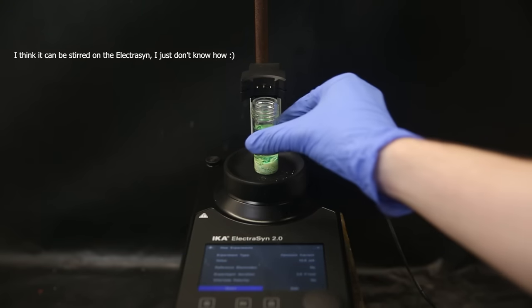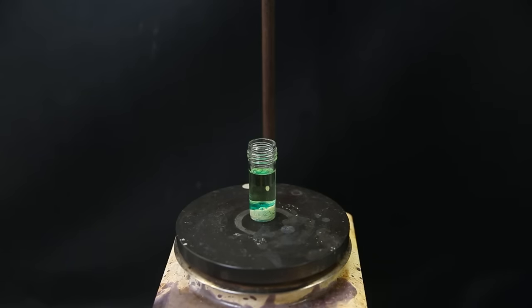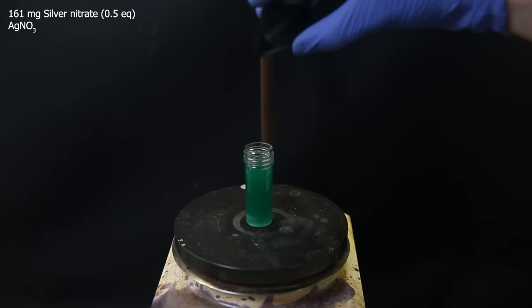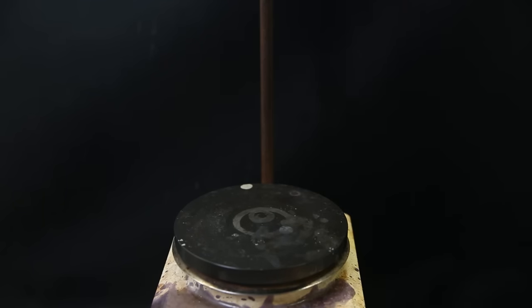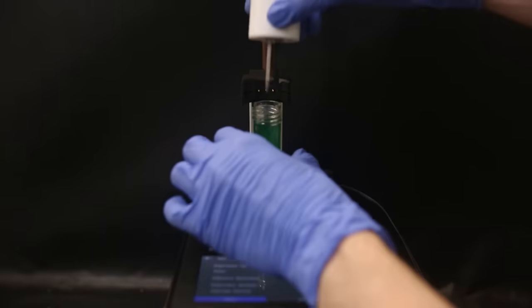I then take the vial to a normal stir plate and let it stir until it pretty much all dissolves. Since I hate working with mega small amounts, I am doing it on a larger scale and more concentrated than the literature, so it might not fully dissolve, but we'll see how it turns out. Then when it looks like nothing more dissolves, I add in 161 mg of silver nitrate as the final reagent, and the reaction should be started ASAP after the addition, otherwise the yield will be reduced. So I take the vial and then screw on the cap with the electrodes.